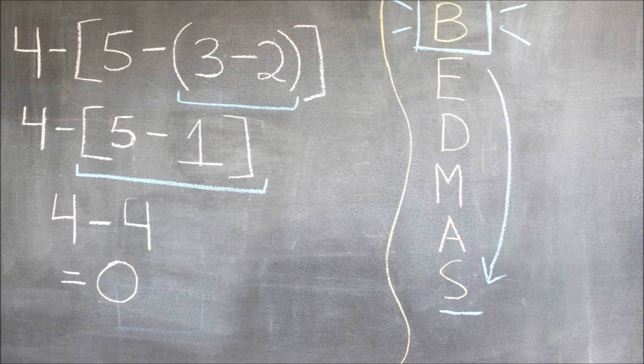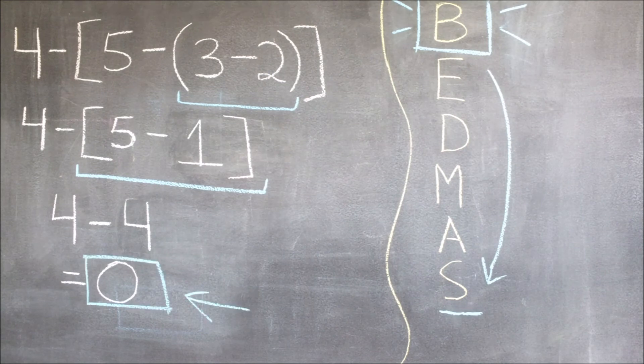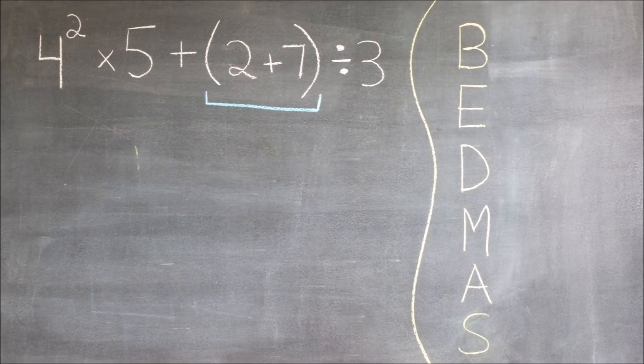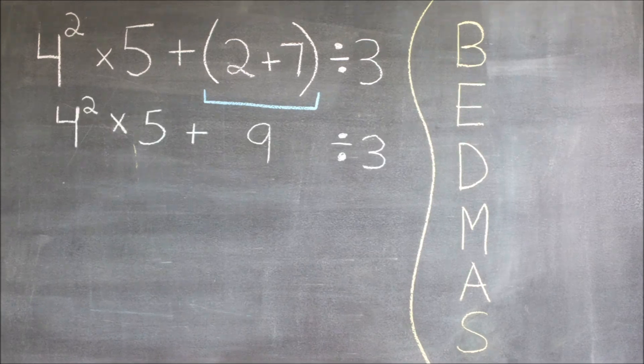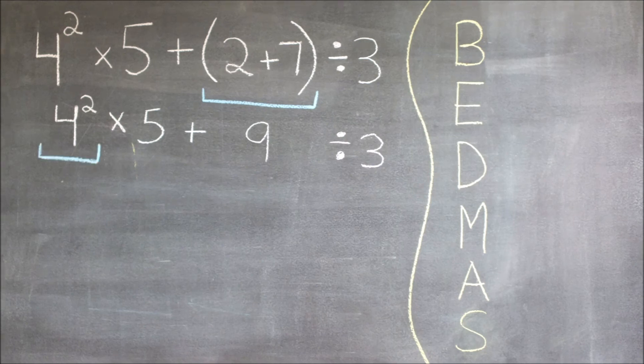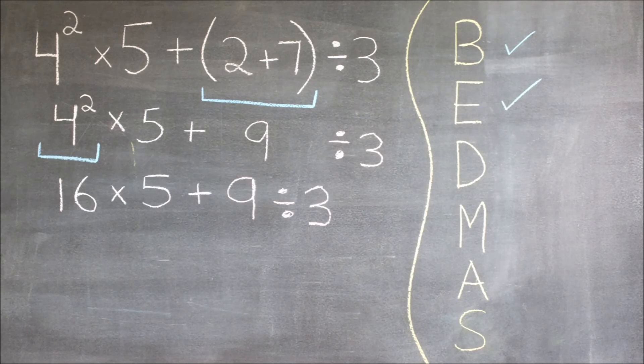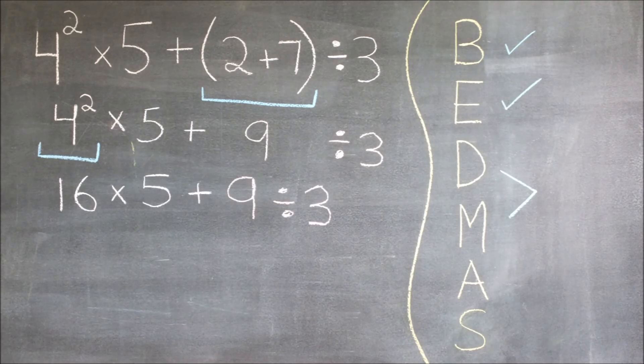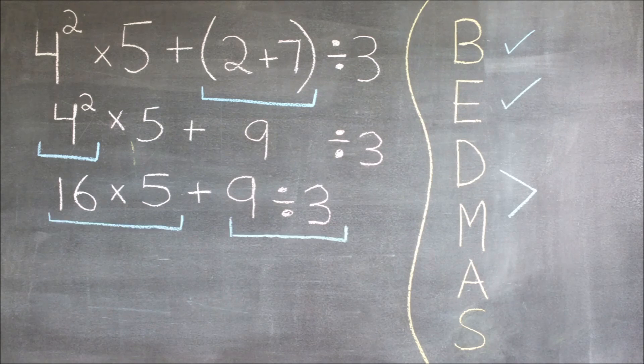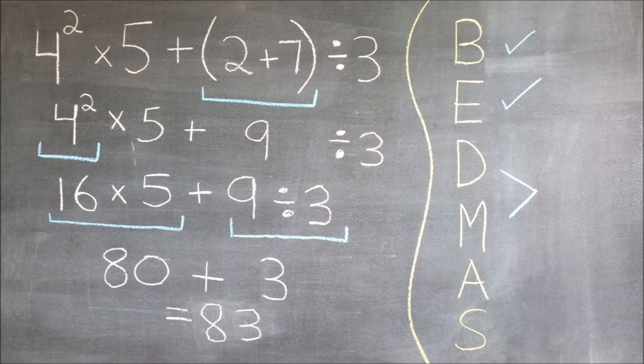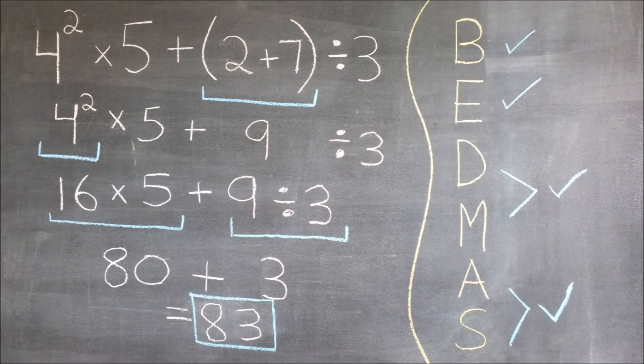Here is another equation we will solve using BEDMAS. First of all, we start by solving the brackets. We can write our answer underneath and bring down the rest of the numbers as they are. Our next step is to solve the exponent. Again, we write our answer underneath and bring the rest of the numbers down. Our next step is division and multiplication. Since the multiplication and division is separated by an addition sign, we can do them both in one step. Then, using all of the BEDMAS steps, we can get to our final answer.